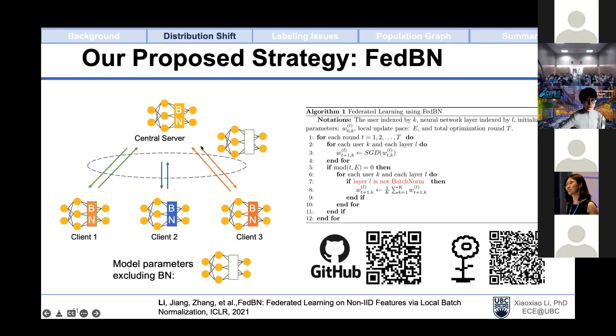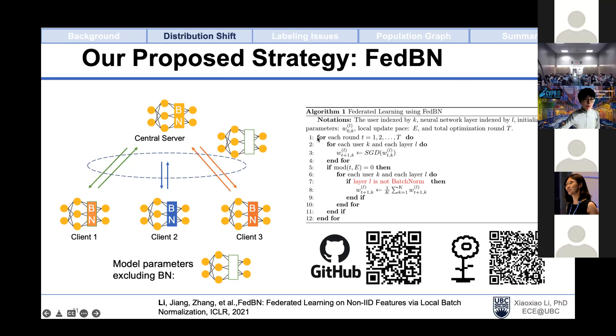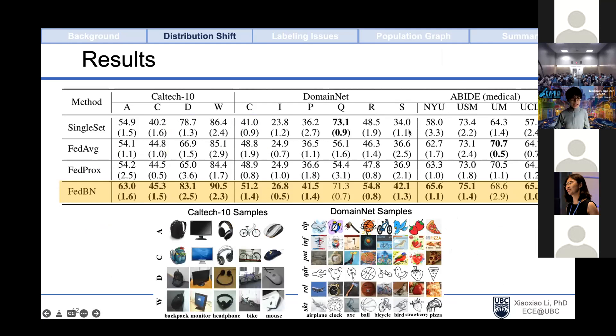Suppose we have two clients in Federated Learning simulated using this toy example. We plot the error surface with respect to the model parameter and BN parameter. We noticed that if we average both model parameters and BN parameters, we have a higher generalization error than averaging the model parameters only. This motivated us to think about what if we exclude batch normalization in the aggregation and let them evolve locally. Thus, we propose our method called FedBN, which is a simple modification from the widely used strategy FedAverage. If you look at this pseudo code, we only have one conditional that needs to be inserted into the original FedAverage algorithm where we make a condition whether this layer is a batch normalization.